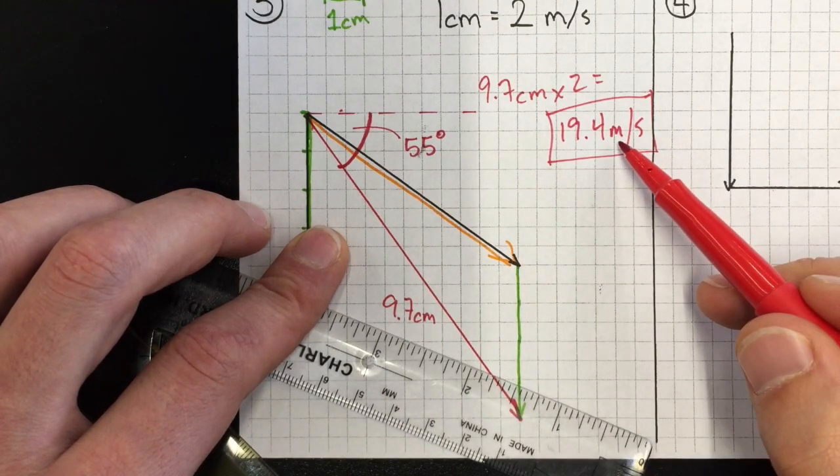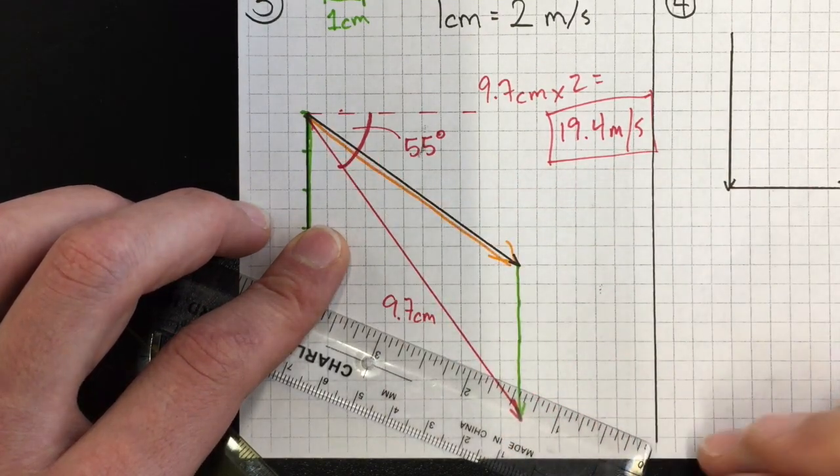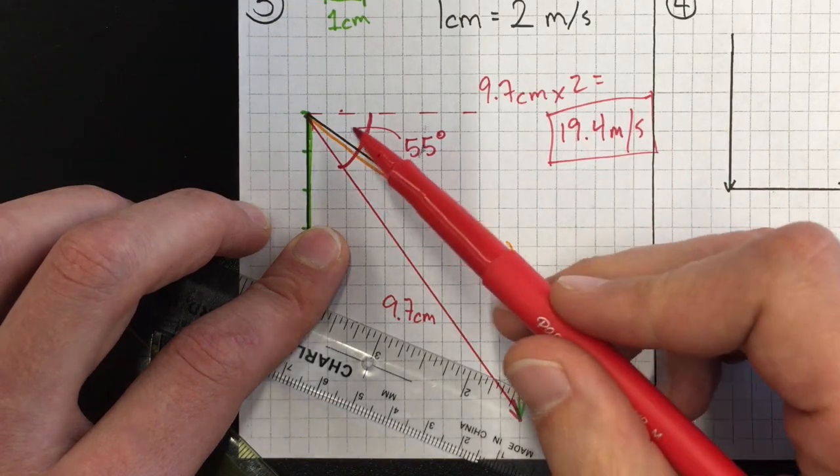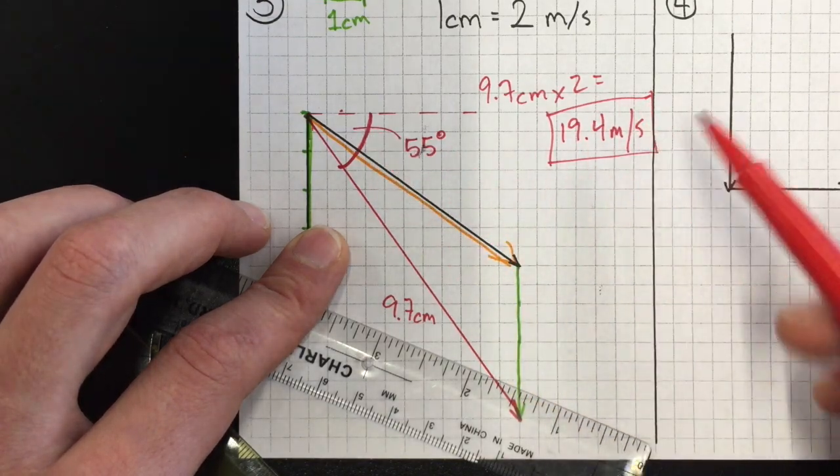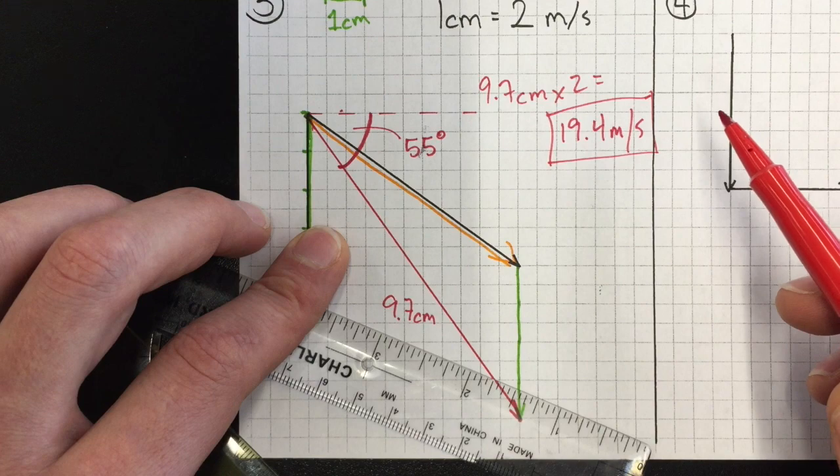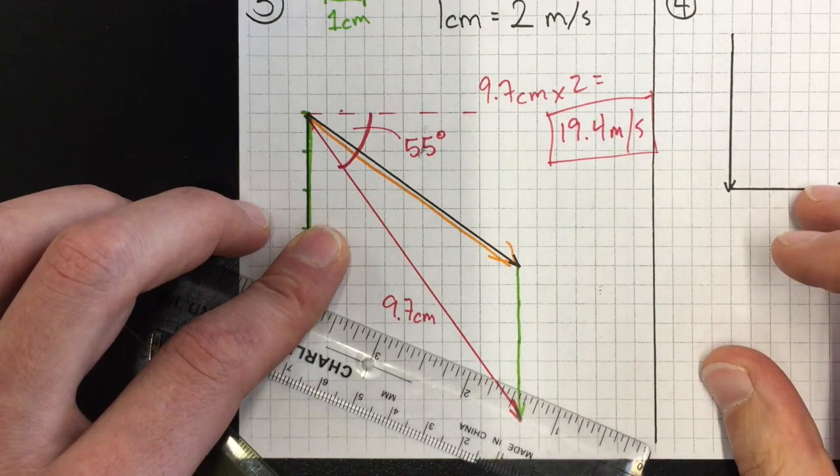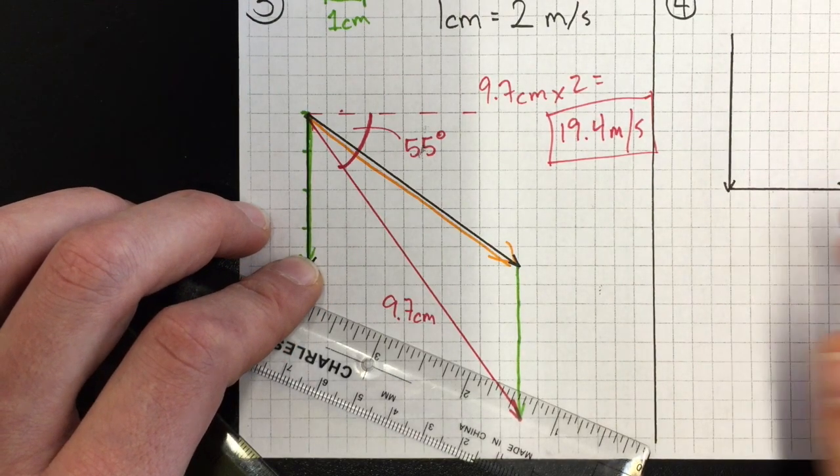In the next video I'm gonna explain how we can find that angle and magnitude using Pythagorean theorem and some trigonometry. That would be a good way to check your work. Thanks.